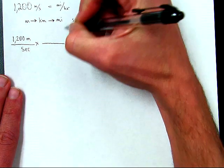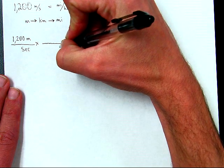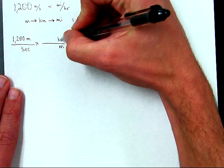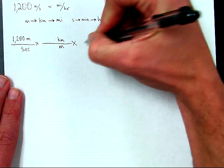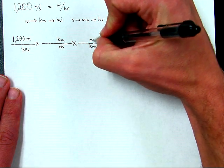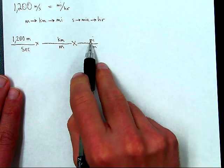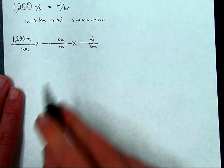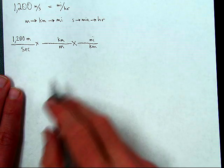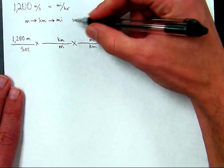So I'm going to say meters down here to cancel this and then kilometers. So from meters to kilometers. And then from kilometers I'll go to miles. That way now I have miles on top as in my final answer, and kilometers cancels kilometers, meters cancels meters. So now it's miles per second.